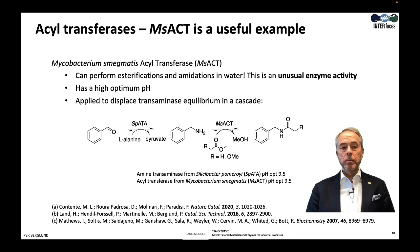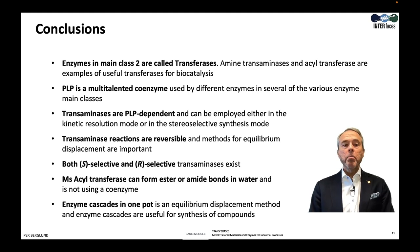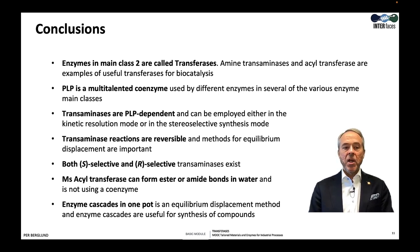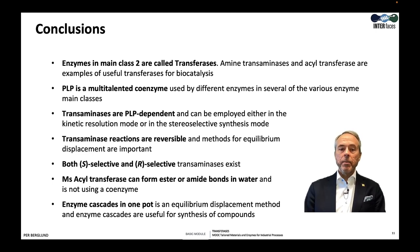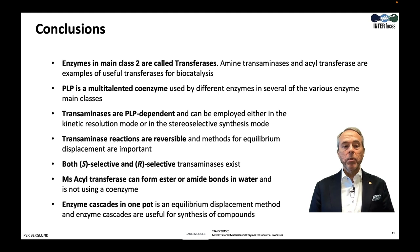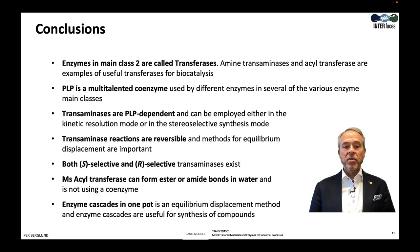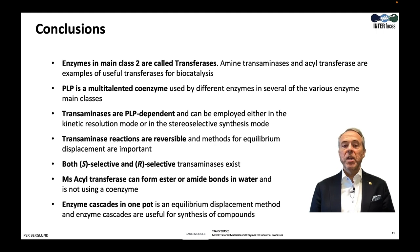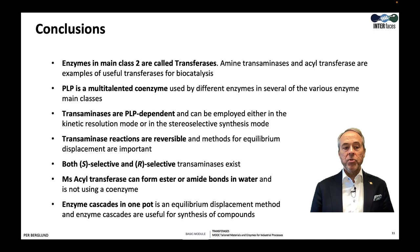Finally, the conclusions. I hope I have shown that two of the subclasses of transferases — namely transaminases and acyltransferases — are very useful for biocatalysis. I talked mostly about transaminases and mentioned that transaminase uses the coenzyme PLP, and that either stereoselective synthesis or the reverse reaction kinetic resolution can be employed. I showed that methods for equilibrium displacement are important, and I discussed the fact that both S- and R-selective transaminases exist and the reason for their substrate and enantioselectivity. At the end, I showed the MS-acyltransferase and its unique property to make esters or amides in water, and I showed a one-pot enzymatic cascade reaction involving this enzyme, which is also an equilibrium displacement method for the transaminase reaction. Thanks for your attention.